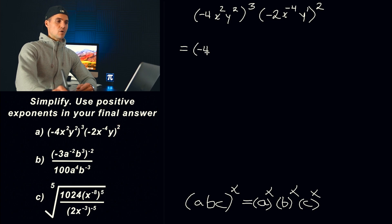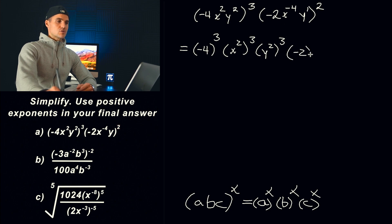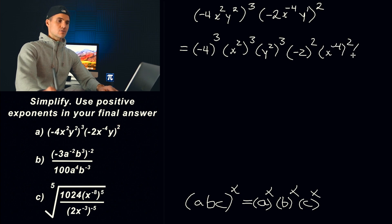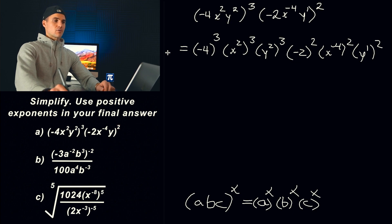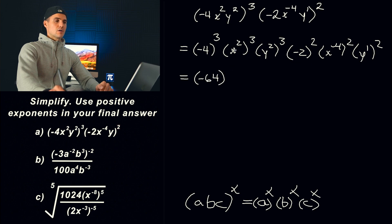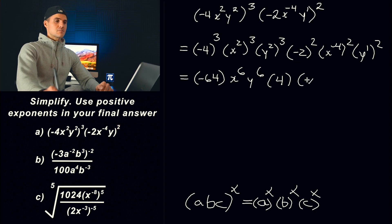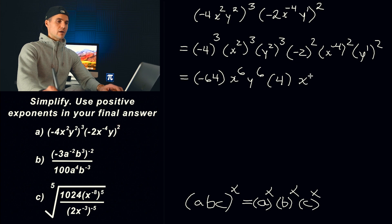What I'm going to do is take these exponents on the outside of the brackets and distribute them. Whenever you're multiplying things within a bracket and you have an exponent on the outside, you can take each of those things to that same exponent. You want to make sure that each of those is in brackets in case there are any negatives floating around like this negative 4. So we would write negative 4 to the power of 3, x squared to the power of 3, y squared to the power of 3, and over here negative 2 to the power of 2, x to the negative 4 to the power of 2, and y to the power of 1 to the power of 2.